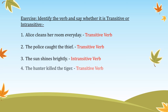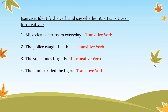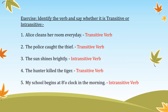'The hunter killed the tiger.' The hunter is the subject, killed is the verb, and the tiger is the object — the action is transferred to the object, so this is a transitive verb. 'My school begins at 8 o'clock in the morning.' My school is the subject, begins is the action, but the object is missing in this sentence. So this is an intransitive verb.